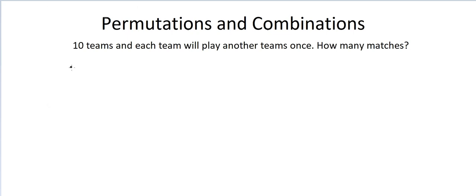Hello everyone. In this video we'll talk about one concept of permutation and combination. For this example I have chosen the cricket world cup. We know there are 10 teams in this tournament and each team will play every other team one time. So how many matches would we have to organize? We're not going to use the direct formula but instead take baby steps and do the calculation in a very systematic manner.